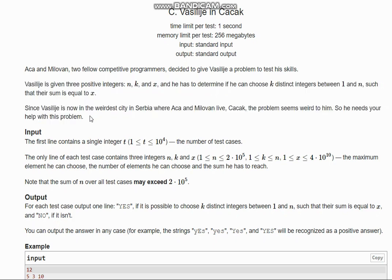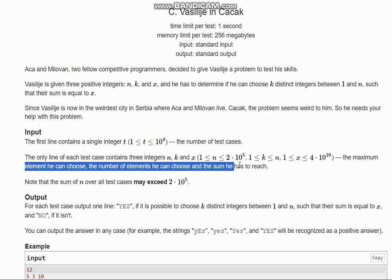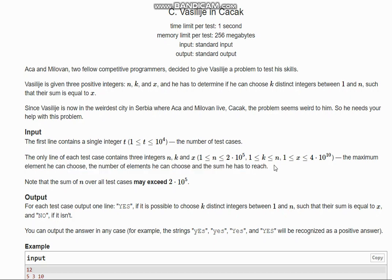So we have test case T which contains number of test cases, and N, K and X - the maximum element he can choose and the number of elements he can choose and the sum he has to reach.